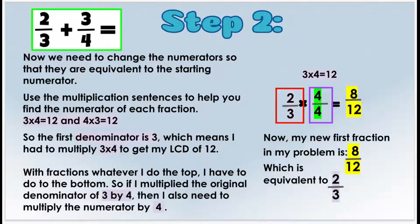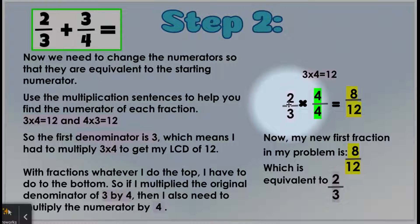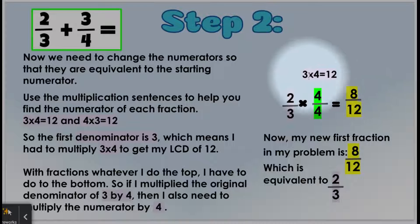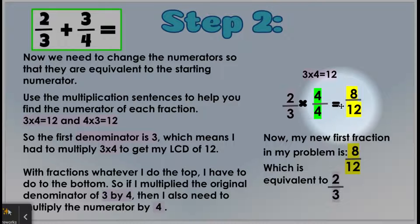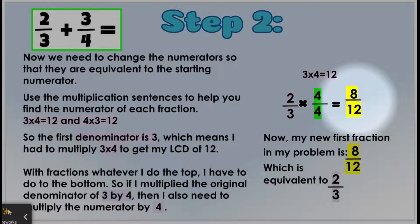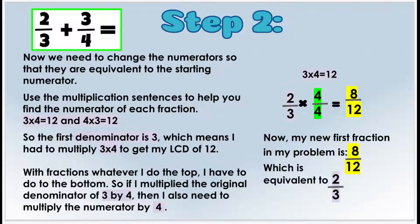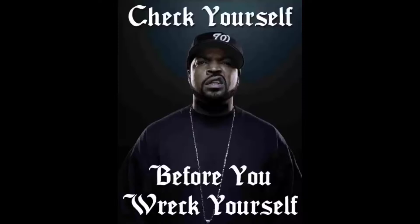With fractions, whatever I do to the top I have to do to the bottom and vice versa. So if I multiply the original denominator of three by four, then I also need to multiply the numerator by four. I'm going to set it up like this: two times four over three times four, and that's going to equal eight over twelve. So now I need to put a four on top to find my numerator and make sure those fractions are equivalent. My new first fraction is eight-twelfths, which is equivalent to two-thirds.